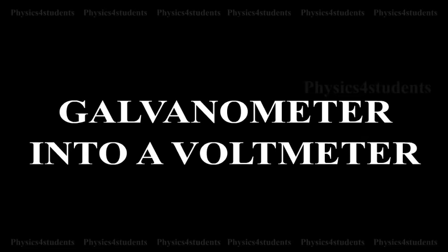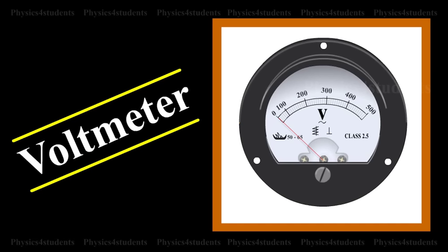Conversion of galvanometer into a voltmeter. Voltmeter is an instrument used to measure potential difference between the two ends of a current carrying conductor.